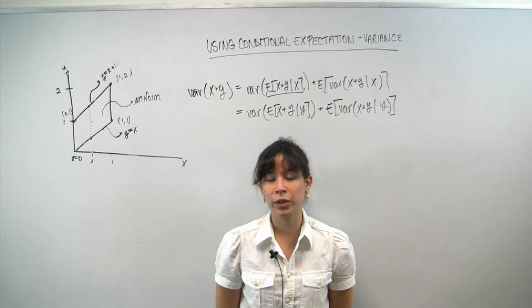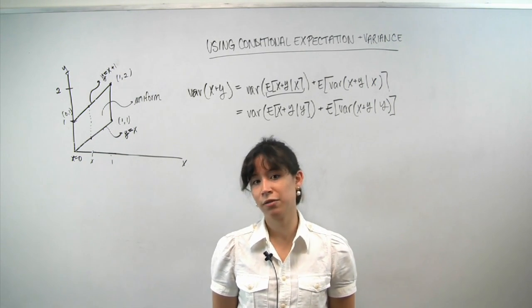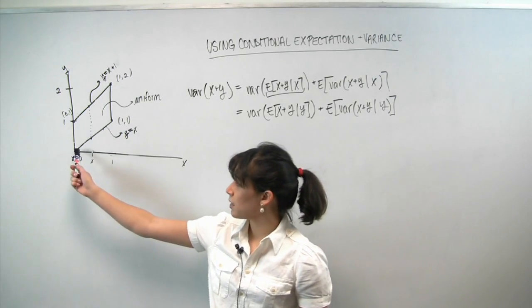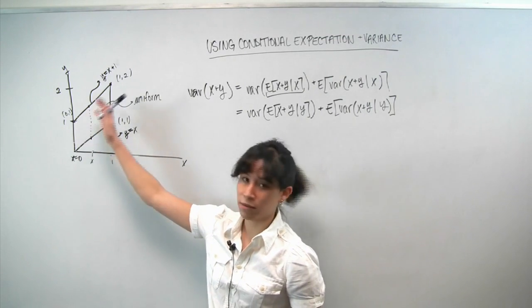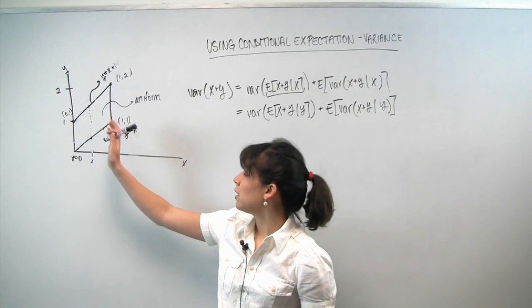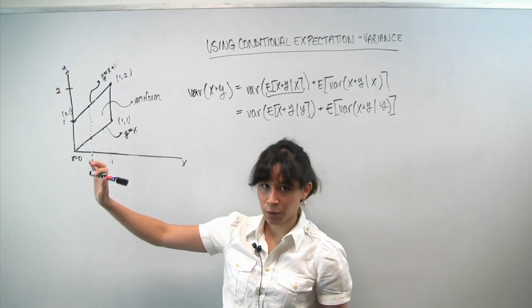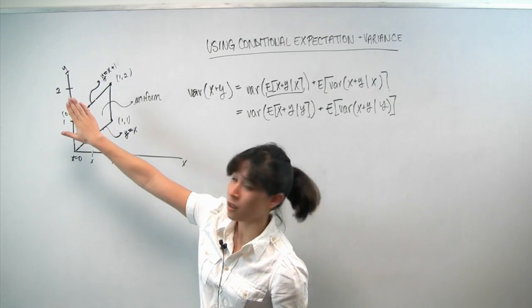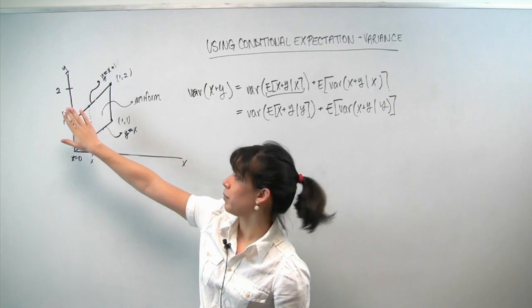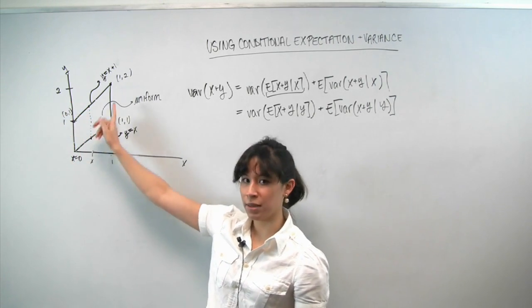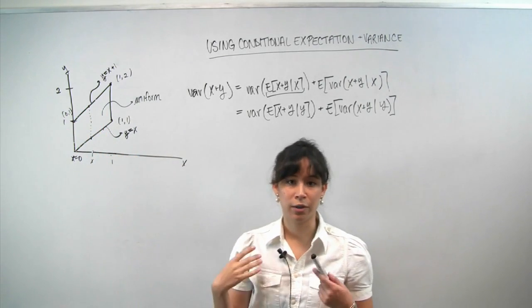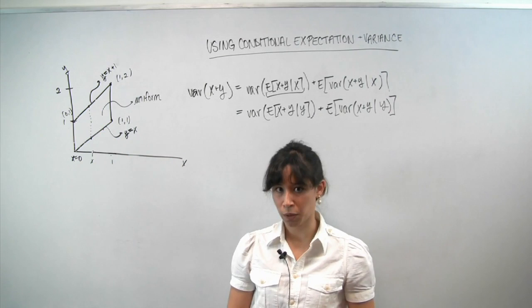So in this problem, we are given a joint PDF for x and y. We're told that x and y can take on the following values in the shape of this parallelogram, which I've drawn. And moreover, that x and y are uniformly distributed. So the joint PDF is just flat over this parallelogram. And because the parallelogram has an area of 1, the height of the PDF must also be 1, so that the PDF integrates to 1.